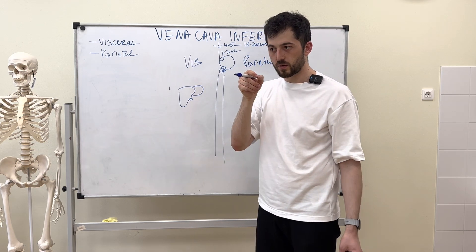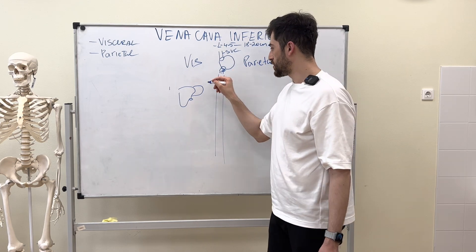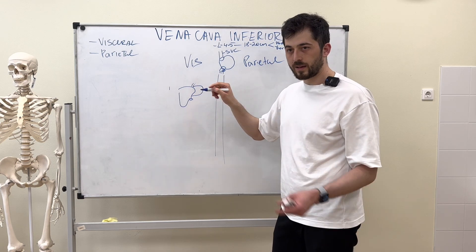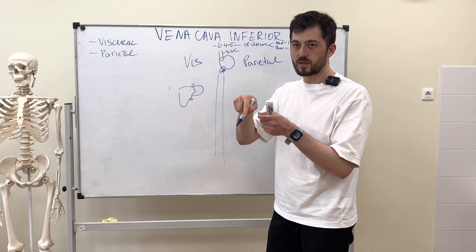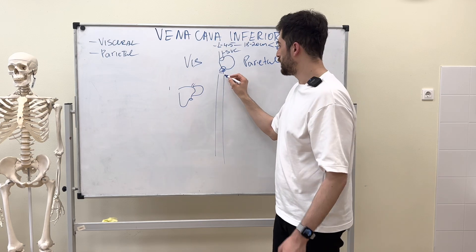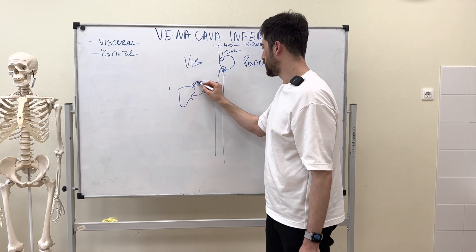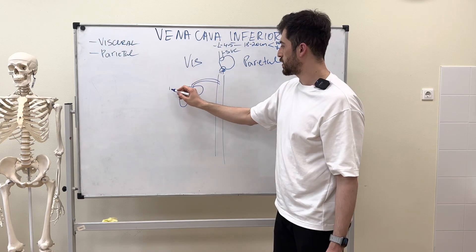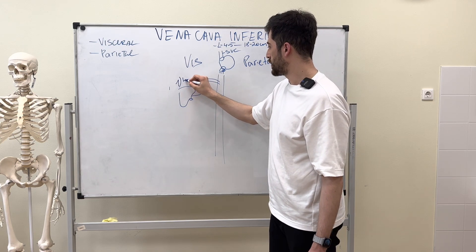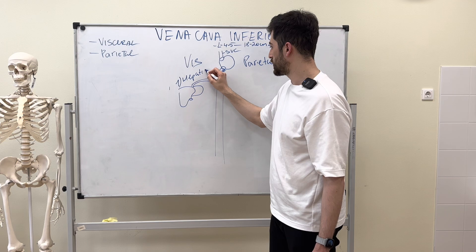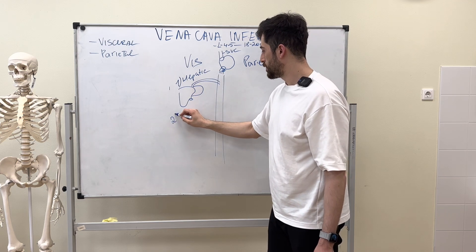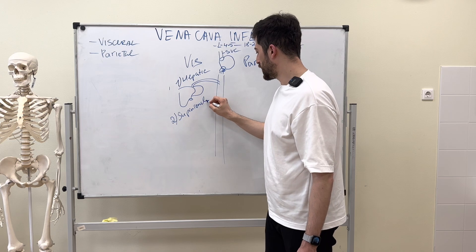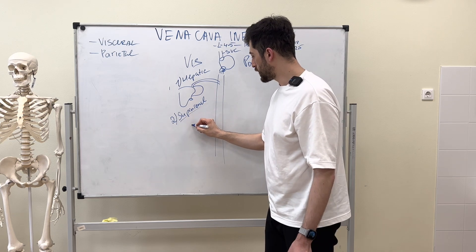If you remember, there is a sulcus for the vena cava inferior behind the liver. At that sulcus, the veins from the liver drain and empty into the inferior vena cava. That visceral branch is the hepatic vein.